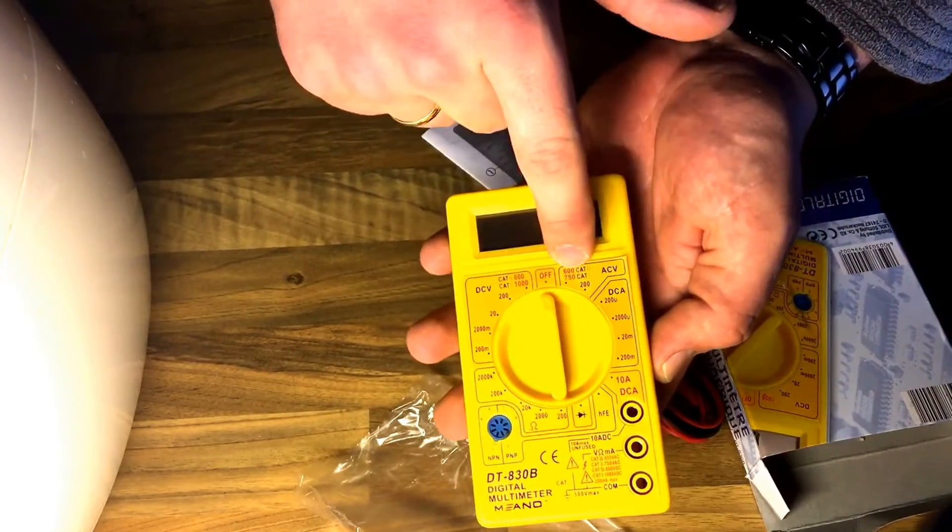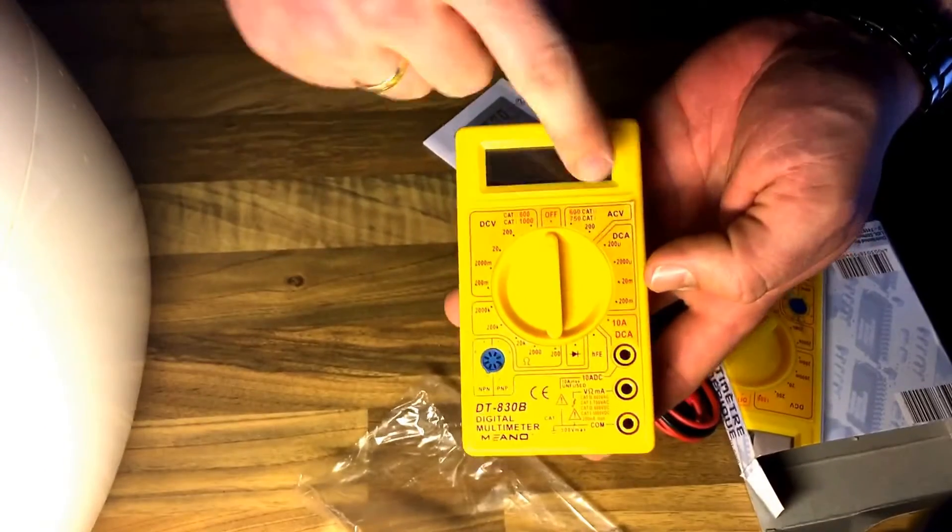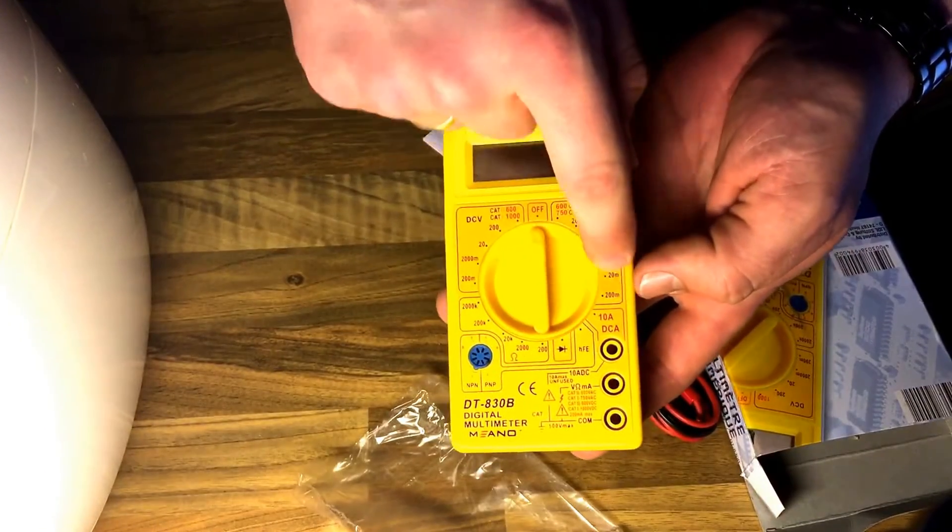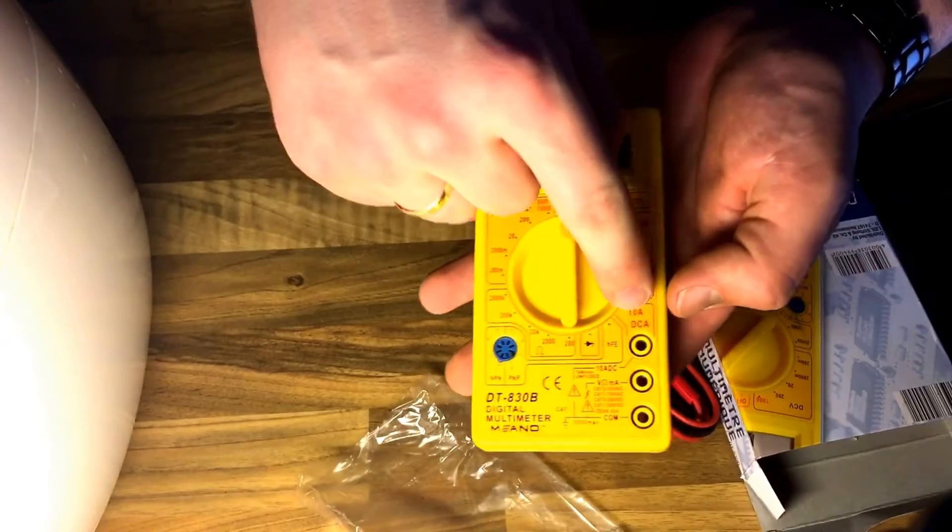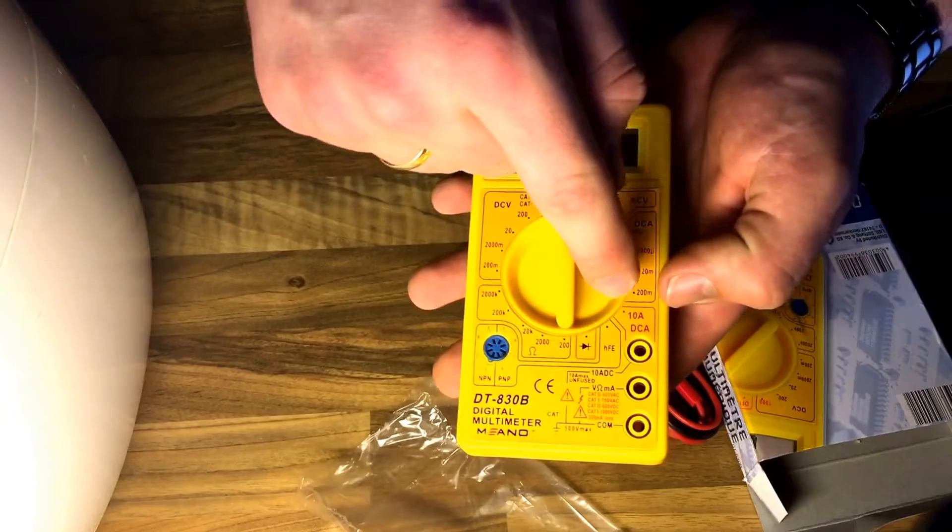...is AC voltage area. Over here is the direct current. There is a socket for the higher current in a higher range over here.